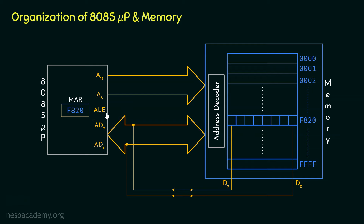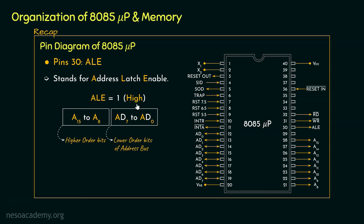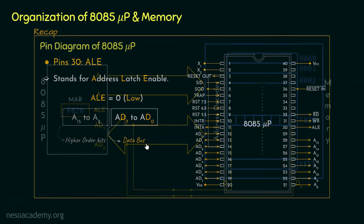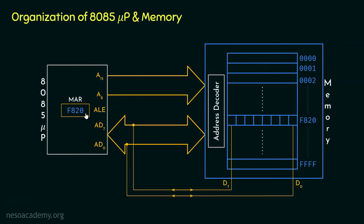When ALE is high (1), AD7 to AD0 carry the lower order bits of the address bus. All pins from AD0 to A15 together carry the entire address of the memory location the 8085 wants to communicate with. On the other hand, when ALE is low (0), the multiplexed channel D7 to D0 works as the data bus.